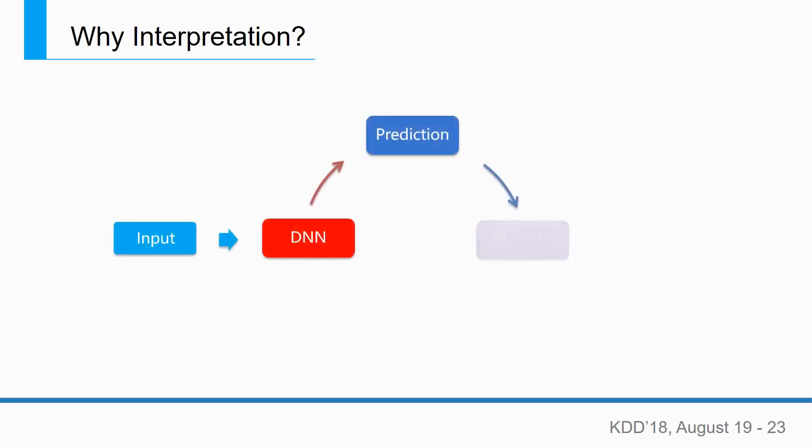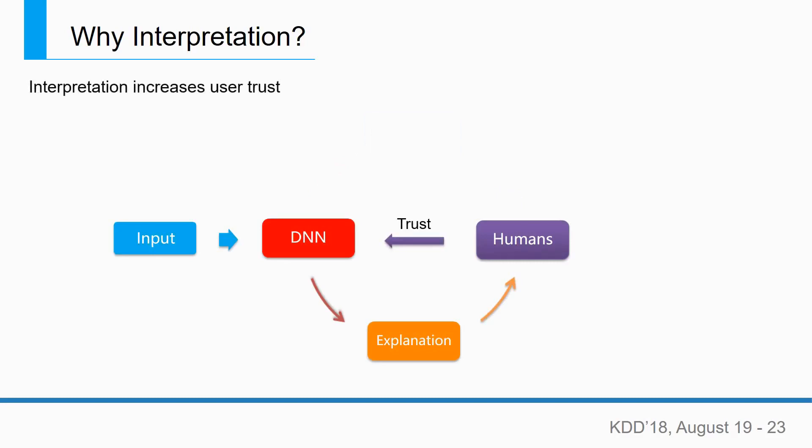Interpretation requires deep neural networks to provide not only predictions to users but also explanations. Eventually, the explanation will increase the trust of users towards deep neural network predictions.